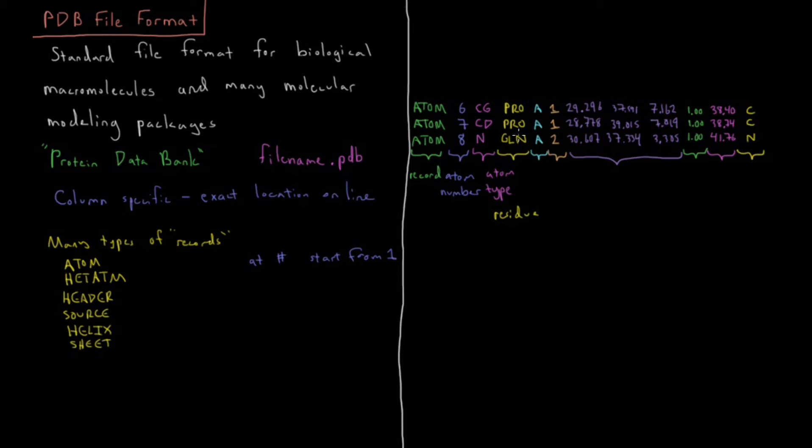The next column is the chain. Sometimes proteins have multiple chains where they're distinct actual molecular fragments. In this case, they're all part of the same chain, chain A.